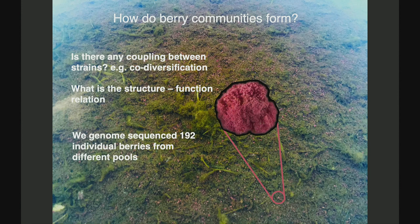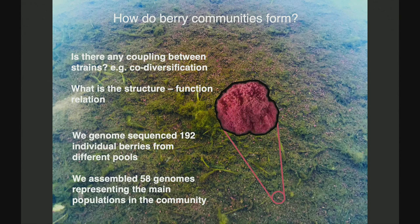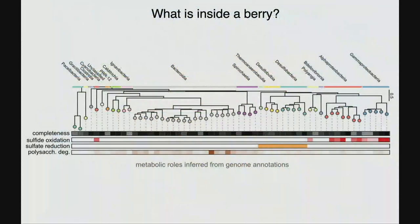What I'm going to talk about is the structure-function question. We have 192 individual berries that we sequenced with full metagenomics, and from that we assembled 58 MAGs — metagenomically assembled genomes — approximately the consensus genome of the different species in the system. So there are at least 58 species there, not just these two main ones.